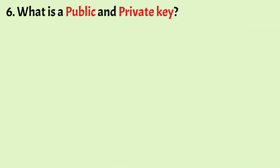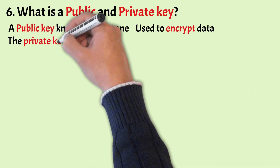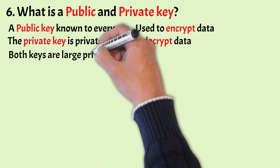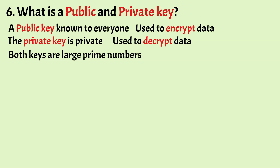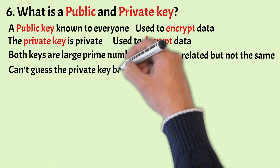What is a public and private key? A public key, as the name suggests, is public and can be known to everyone. The public key is used to encrypt the data. A private key is private and must be kept private at all times — it is secret and known only to the user who owns it. The private key is used to decrypt the data. Both keys are large prime numbers that are mathematically related to one another. One cannot guess the private key based on the public key.